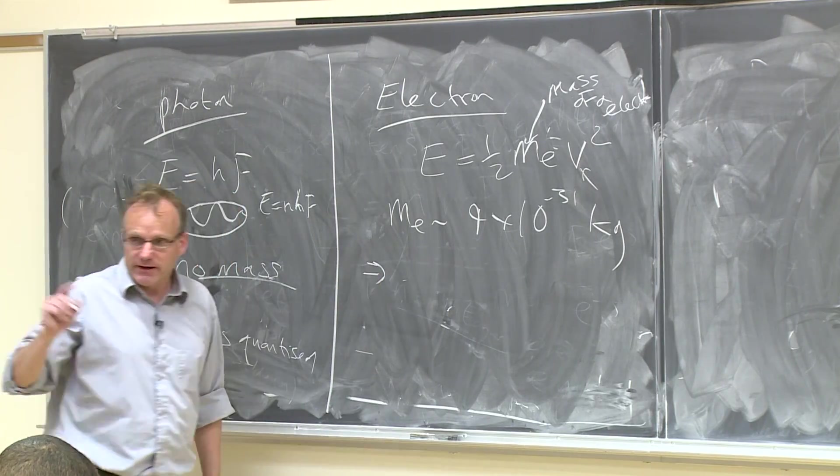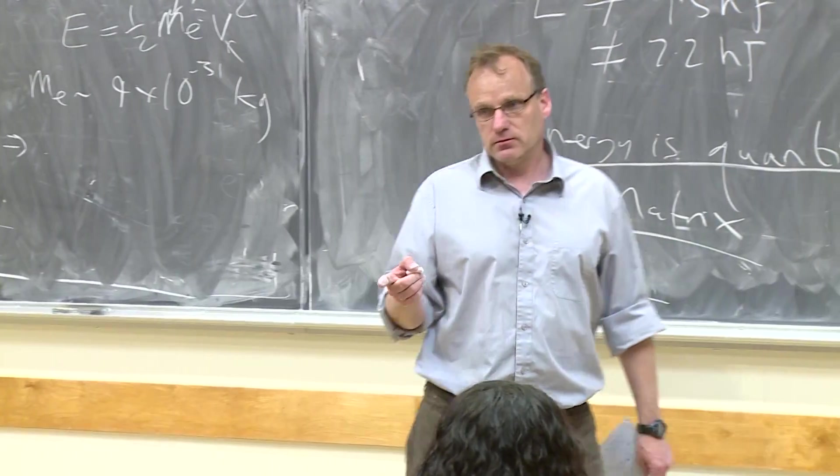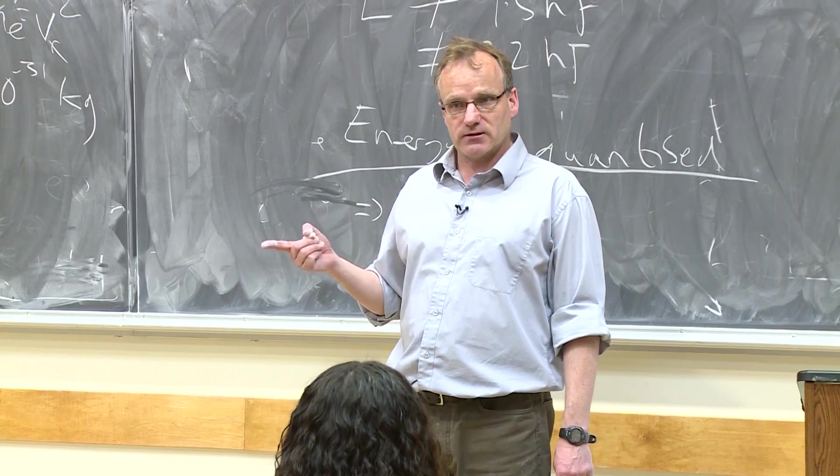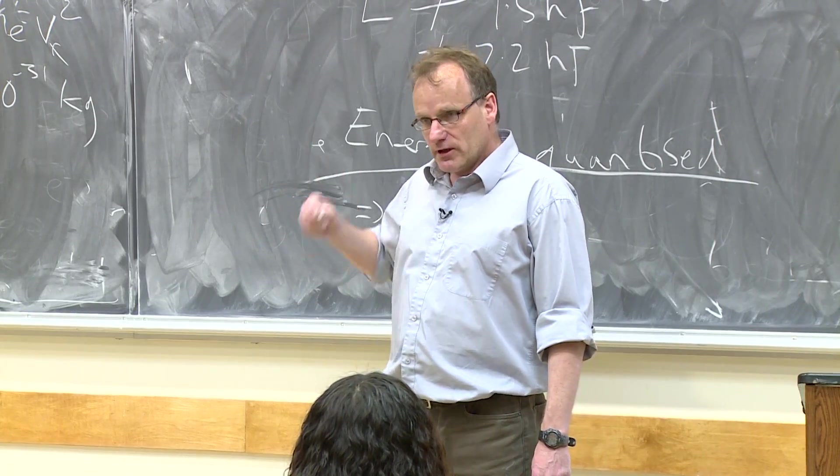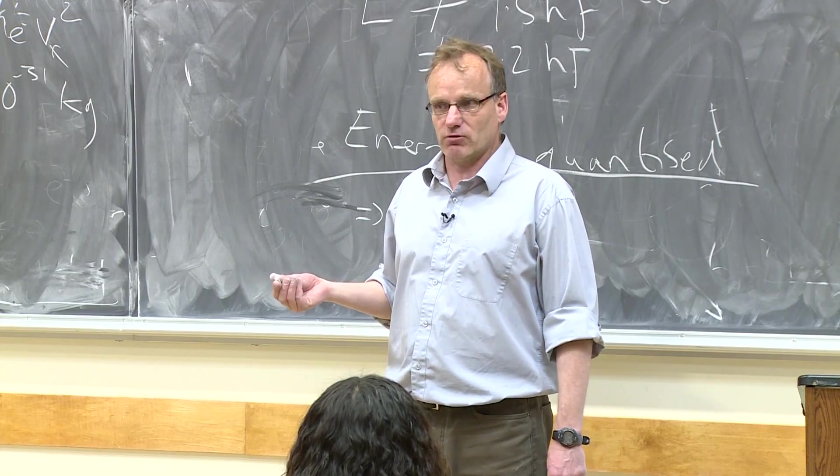But if you put an electron in an atom, then it can be quantized. Electrons in atoms are quantized, because electrons in atoms only have certain orbitals. An electron can only exist in an atom in a certain state.